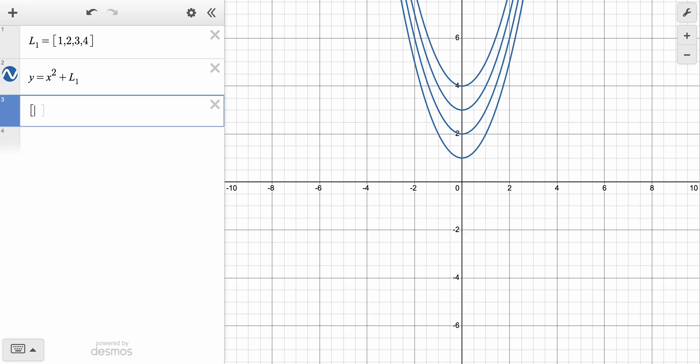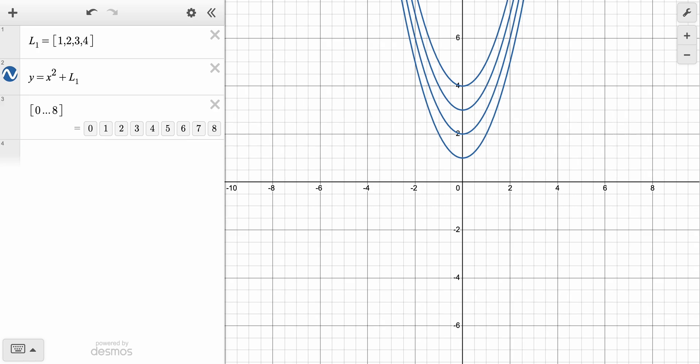Enter a square bracket and then your first number 0. Then add an ellipsis or three dots followed by your final number 8. Now you'll have a list of every integer from 0 to 8. We'll call this list L2.